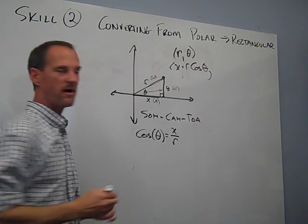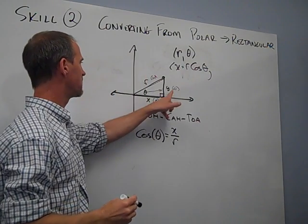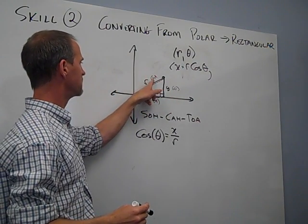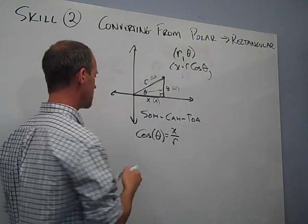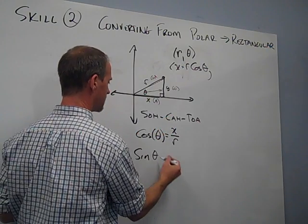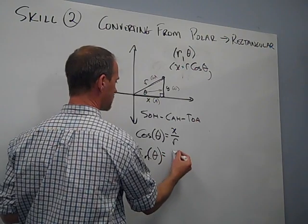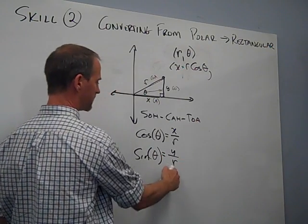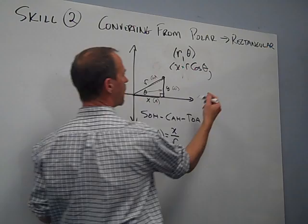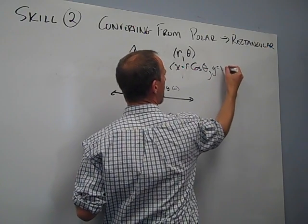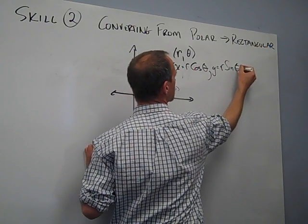Then my y value, similarly, will be the opposite over the hypotenuse. Opposite and hypotenuse, that's the sine. So I'll write the sine of theta is equal to y over r. Multiply both sides by r, and I get y equals r sine of theta.